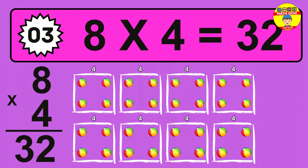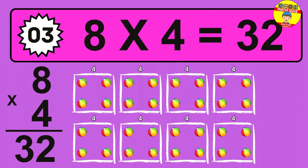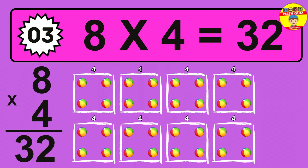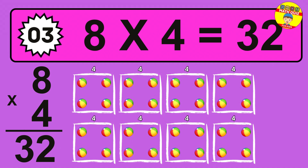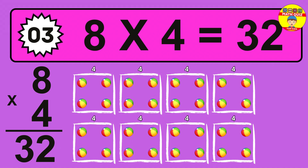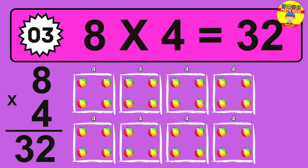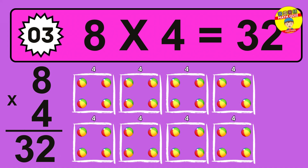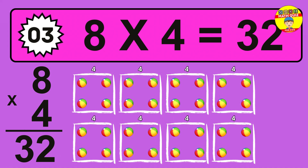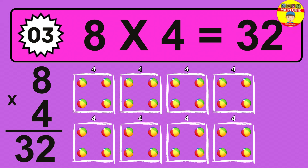The answer is 8 times 4 is 32. To calculate, we have 8 groups with 4 balls each one. So, how many balls do we have? 32 balls.